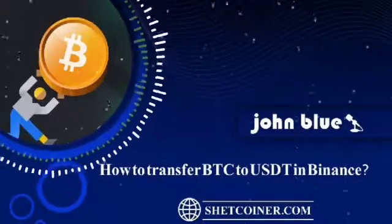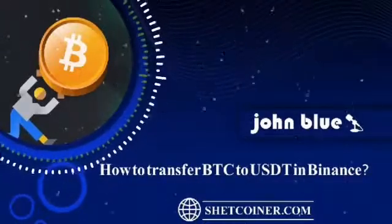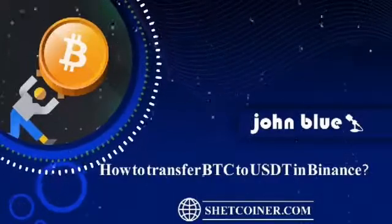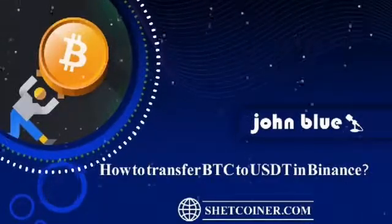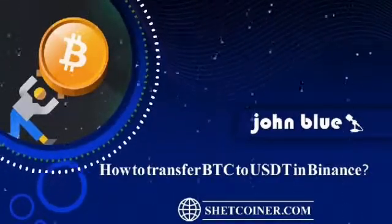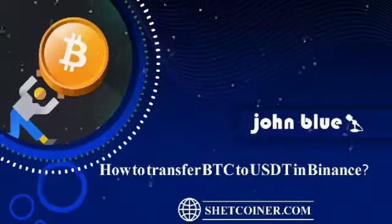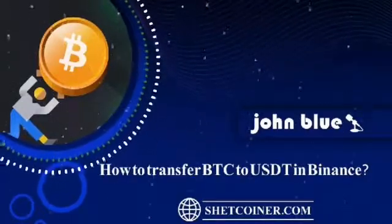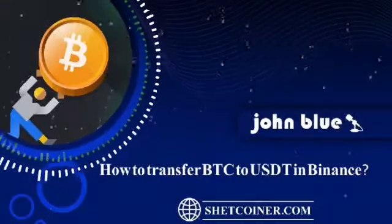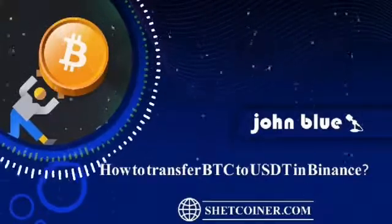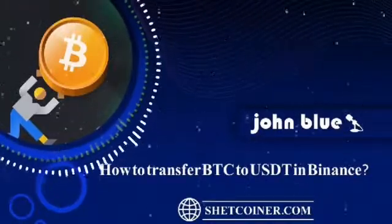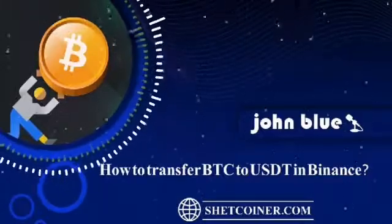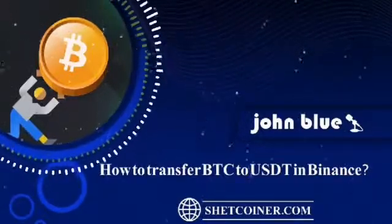Now, the Classic Trade section. In this method, you can sell your Bitcoin for USDT in the Classic Trade section and convert your Bitcoin to Tether. Number one: log into your account in Binance exchange website. Number two: go to the Trade menu and click on Classic Trade.